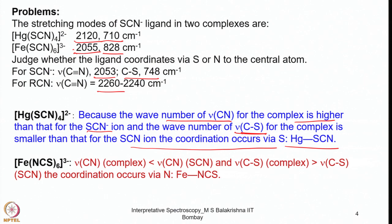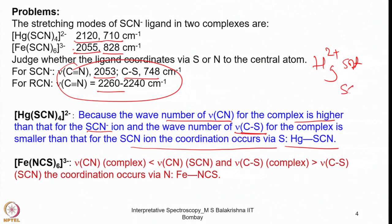From a coordination chemistry point of view, if we don't have comparison data for the free ligands, we can still assign coordination mode by considering soft-hard interactions. Mercury(II) is a soft center, so it prefers a soft donor atom — sulfur is a soft donor, so mercury is likely connected to sulfur. Iron(III) is a hard center, so it prefers the hard donor — nitrogen — which arrives at the same correct answer.